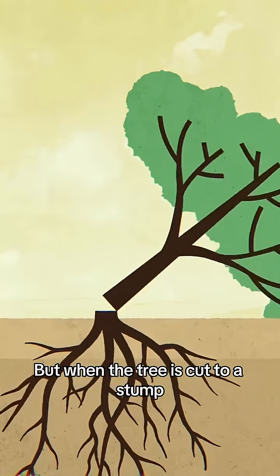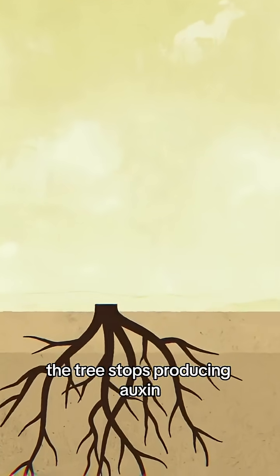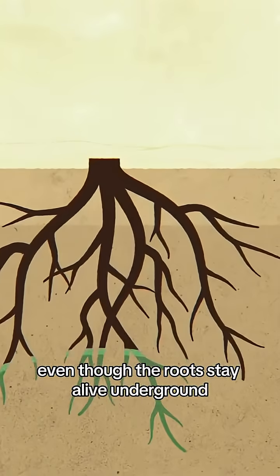But when the tree is cut to a stump, the tree stops producing auxin, even though the roots stay alive underground.